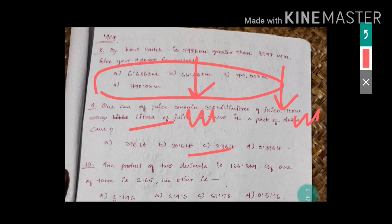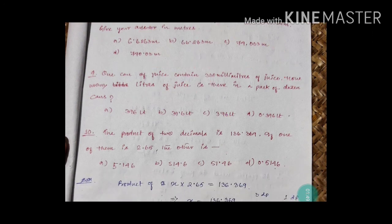Question 10: one can of juice contains 330 milliliters. How many liters of juice are there in a pack of a dozen cans? One dozen is 12, so 12 cans will contain how much? Use the unitary method — multiply the amount per can by 12 to get the total.